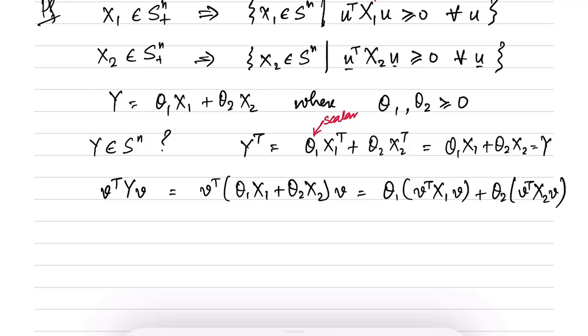So we have two quantities here. Now we know from the positive semi-definite definition of positive semi-definiteness that this quantity has to be positive or non-negative for all V and this quantity has to be non-negative for all V.